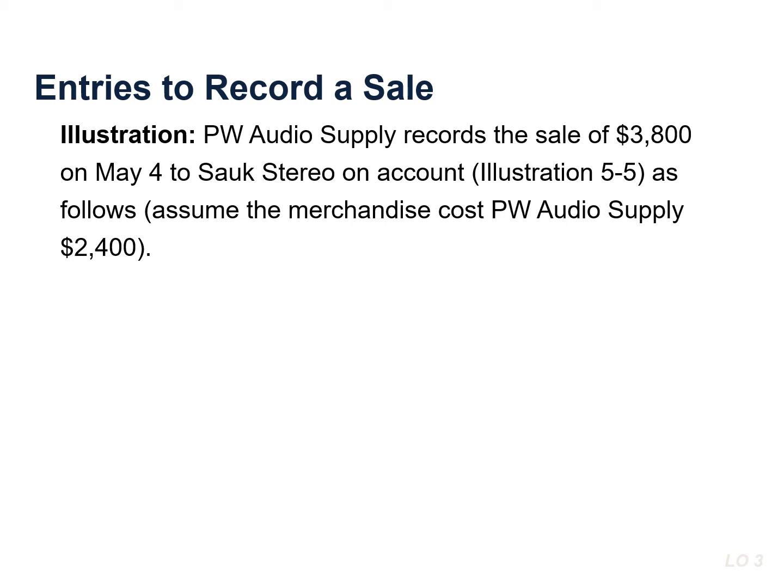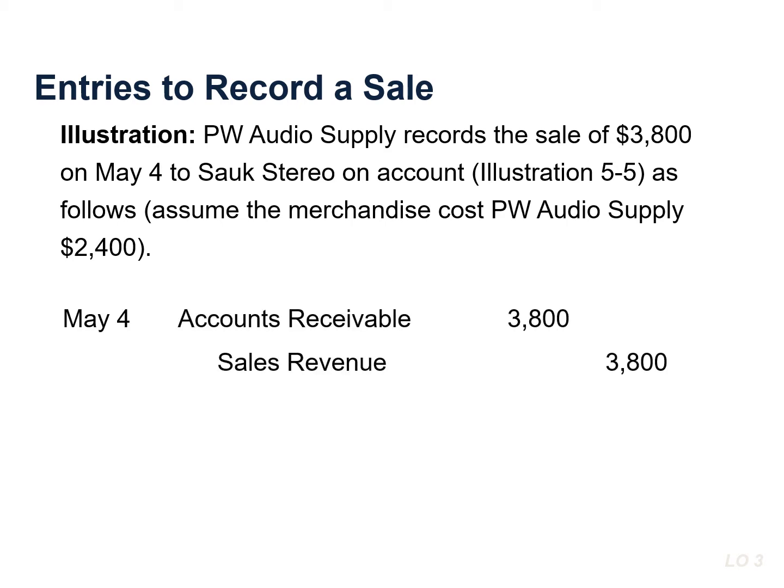To illustrate a credit sales transaction, PW Audio Supply records the sale of $3,800 on May 4th by debiting accounts receivable and crediting sales revenue for $3,800. They will also increase or debit cost of goods sold, and decrease or credit inventory for the cost of those goods. In this example, we assume the merchandise cost $2,400.